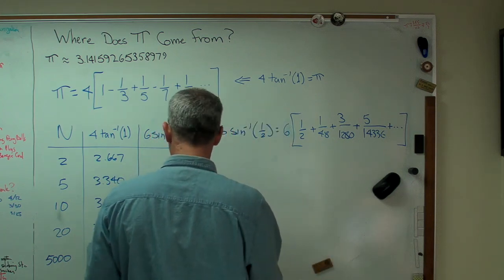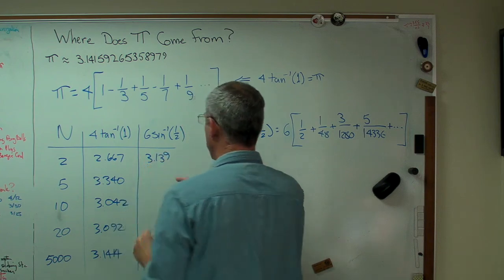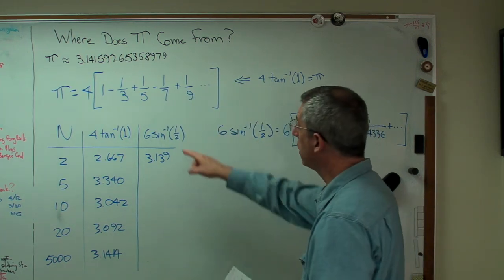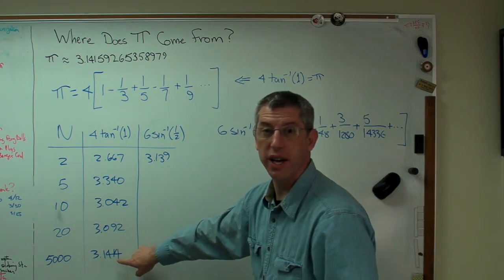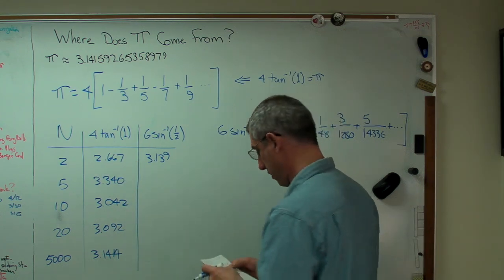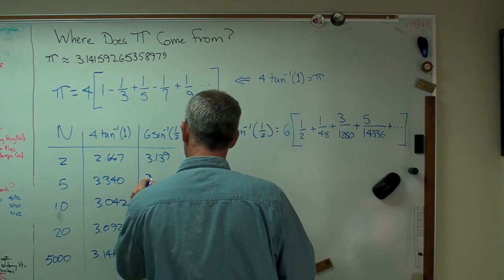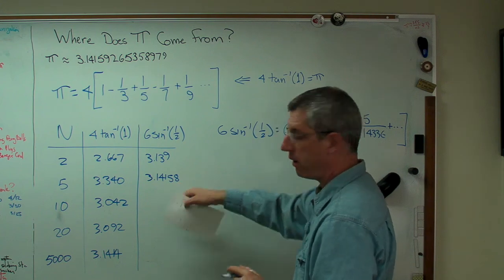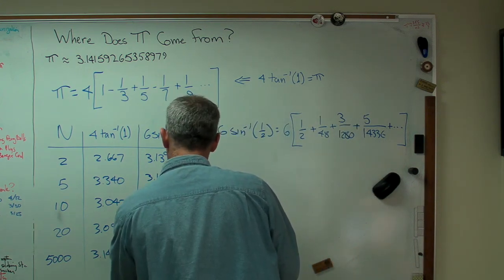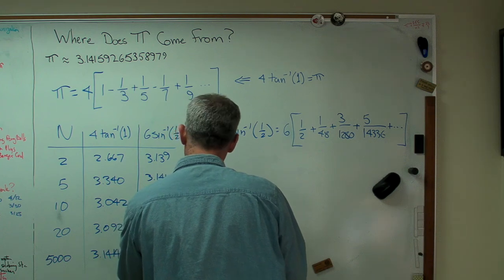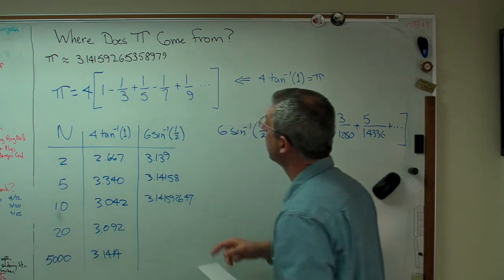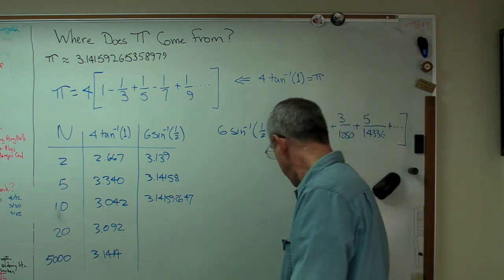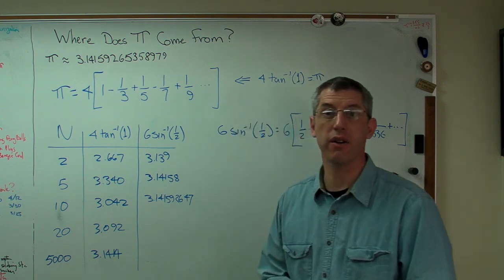I'll just write these down quickly. Already, that's almost pi. That's two terms. So two terms with this expression is already almost as accurate as 5,000 terms with that one. If you go to 5 terms, you get 3.14158, which is accurate all the way up to that one. That one's off by a little bit. If you go here, you get 3.141592647. Wow. So you can see how quickly this converges. By the time you get up to 20 terms, you've got an approximation that's as accurate as you could possibly need.